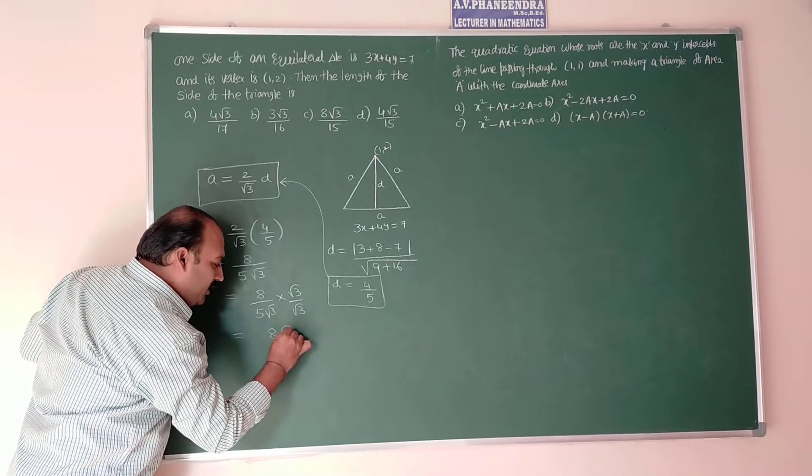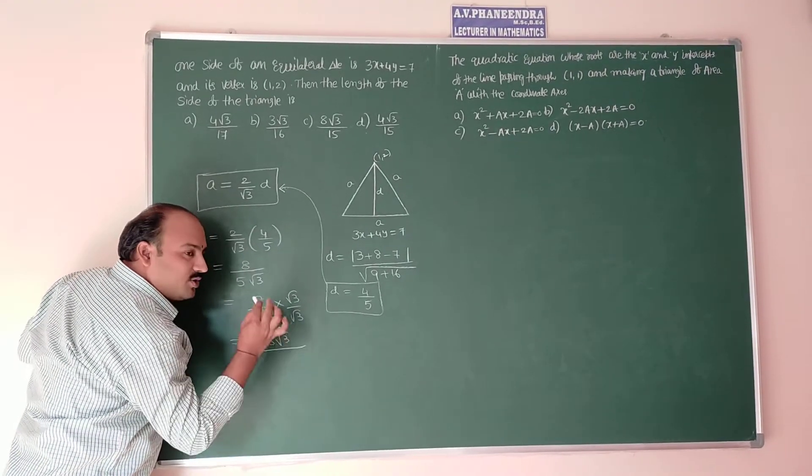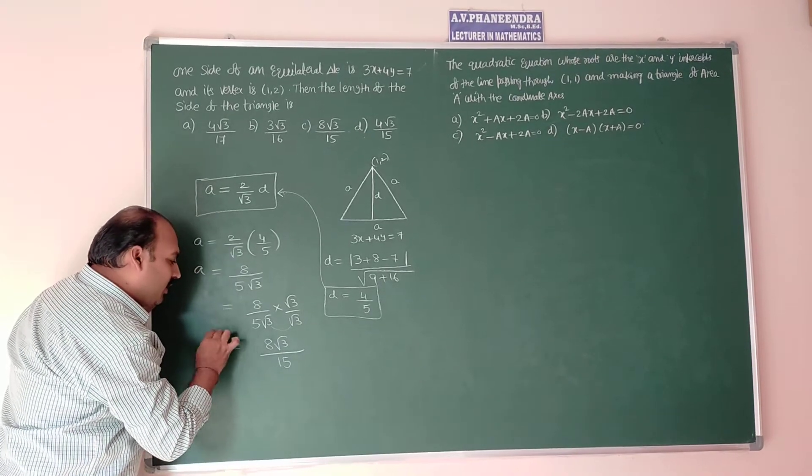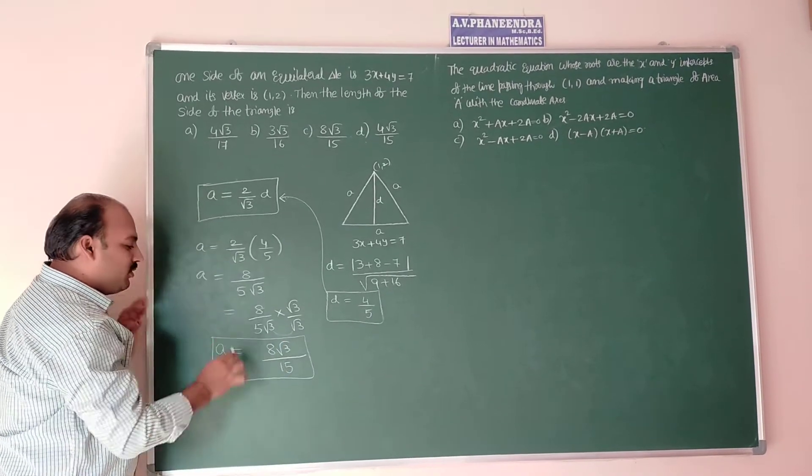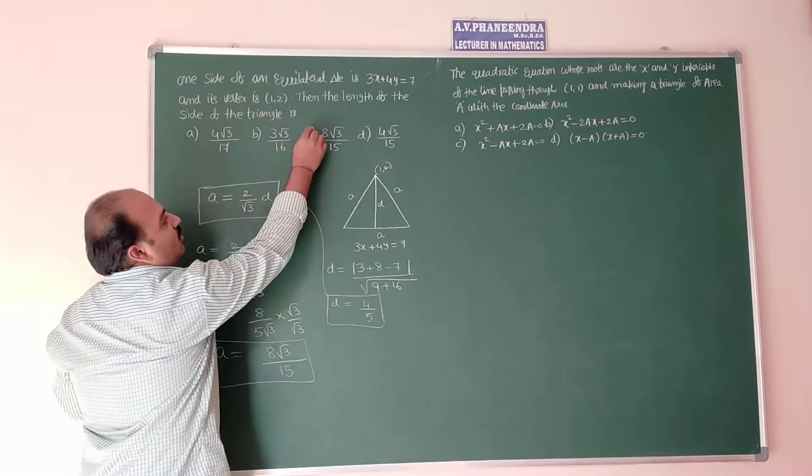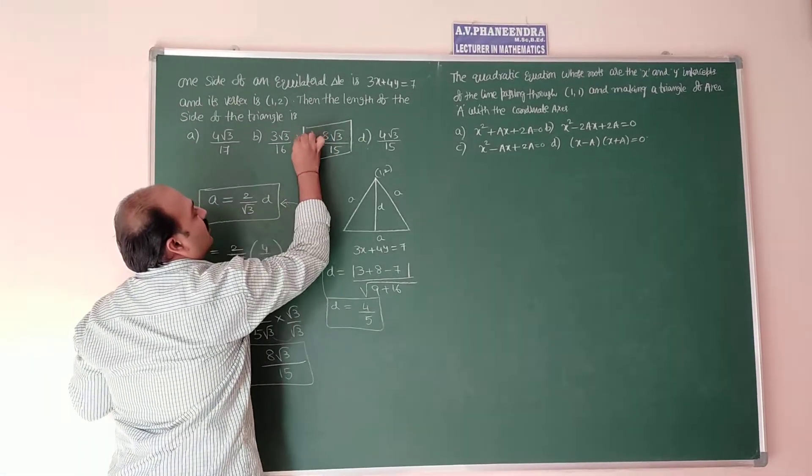So 8 root 3 divided by root 3 into root 3 is 3, 3 into 5 is 15. Therefore the length of equilateral triangle according to the problem is A equal to 8 root 3 by 15 units, which we have to observe in the third option.